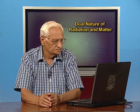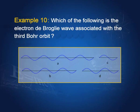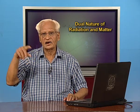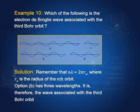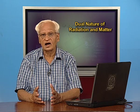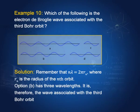Which of the following is the electron de Broglie wave associated with the third Bohr orbit? We recall the relation 2πr = nλ. Just count the number of complete wavelengths: where there are exactly three complete waves satisfying 2πr = 3λ, that is the correct orbit. Option B has three wavelengths, it satisfies this relation, and therefore that is the right answer.